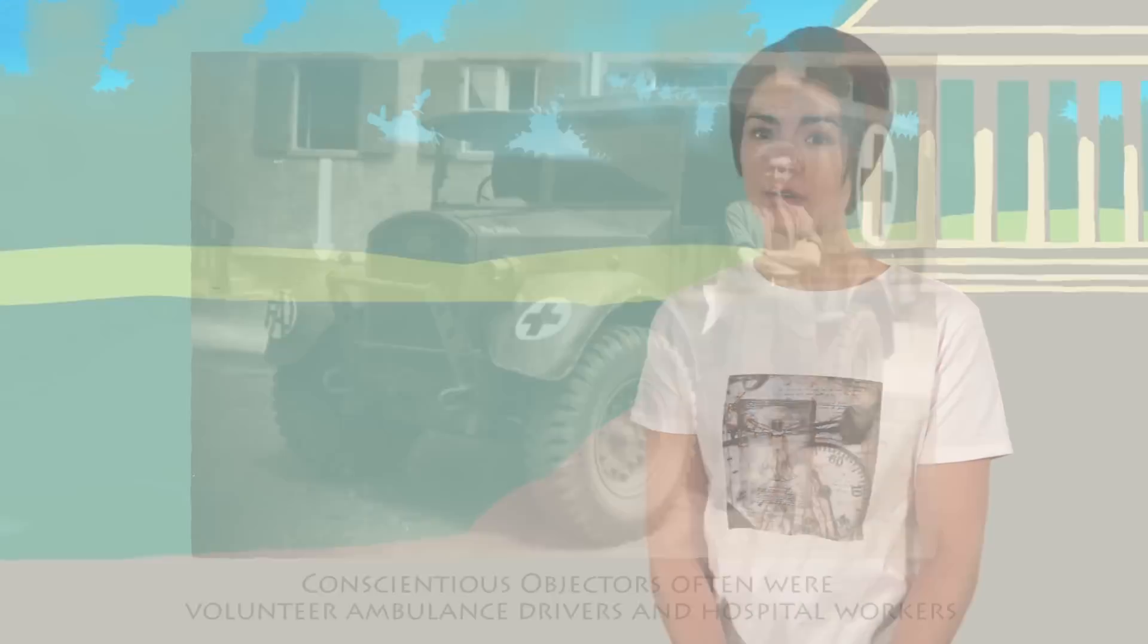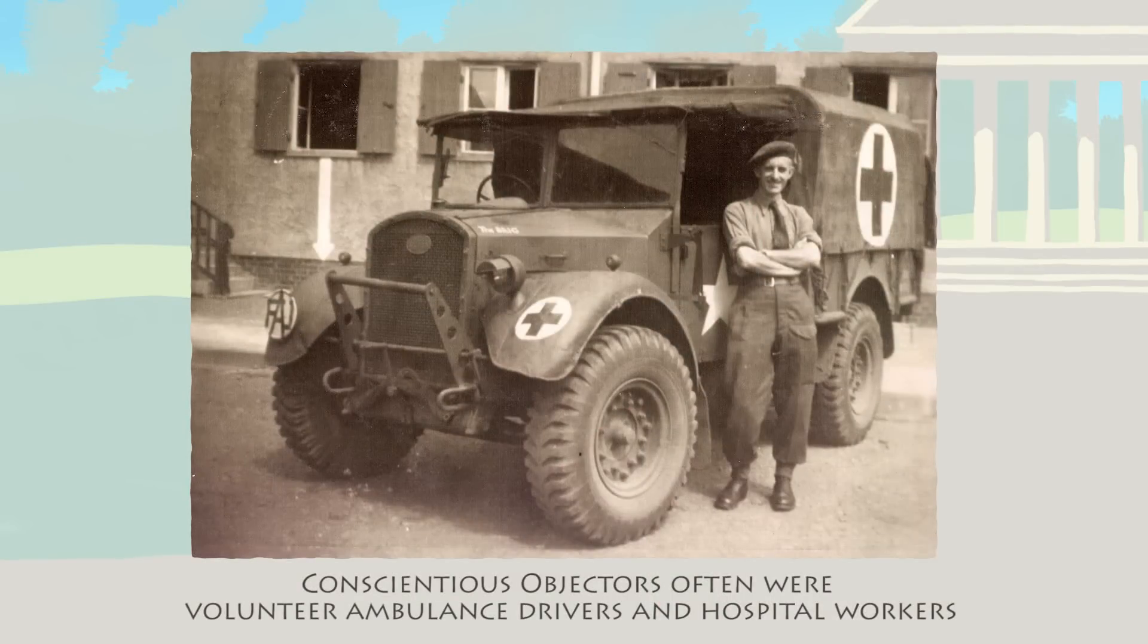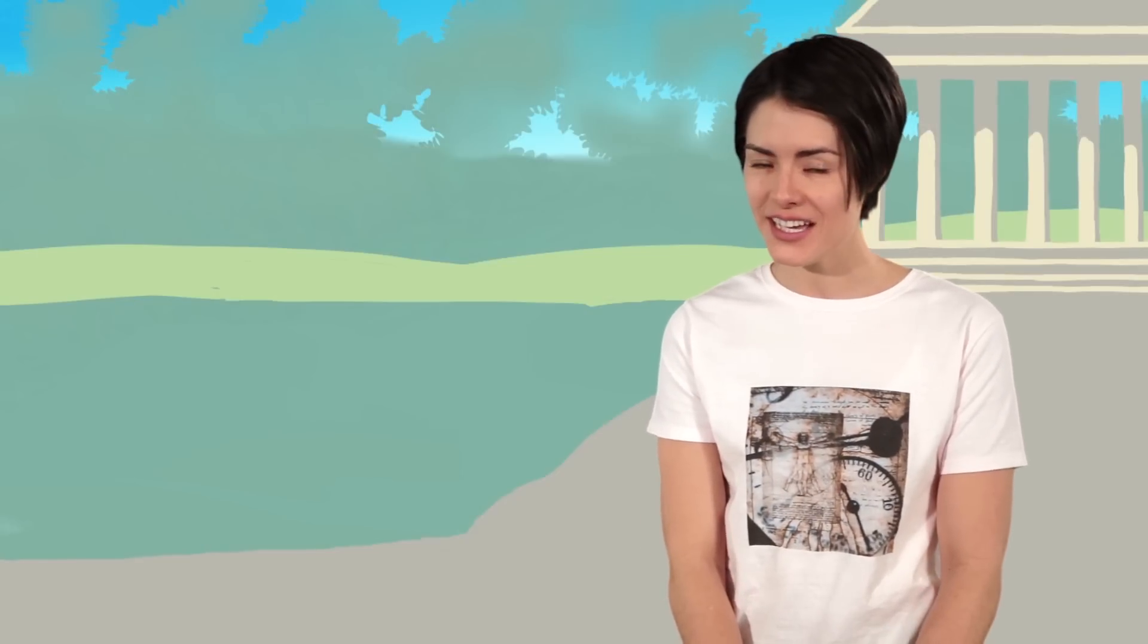Sanger was a conscientious objector during World War II and was exempted from active military duty due to his Quaker faith. He spent some time serving as a hospital orderly and then returned to academics, pursuing a PhD at Cambridge. He was awarded his degree in 1943 for his thesis work on the metabolism of lysine.